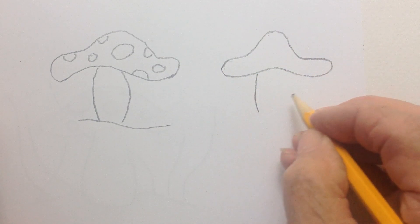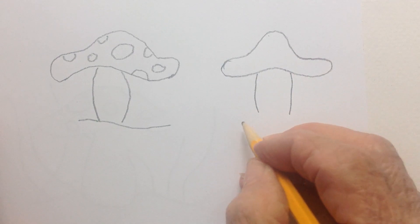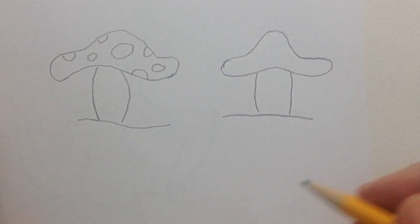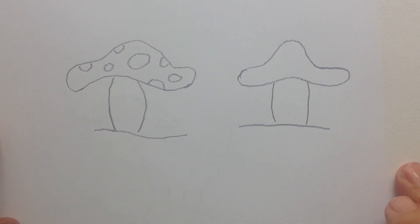And this one, you can go straight down, make it fatter, shorter, with a straight line. So you see, there's all kinds of ways you can do it. A mushroom.